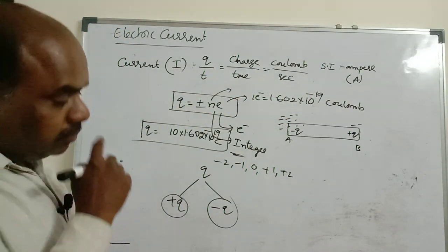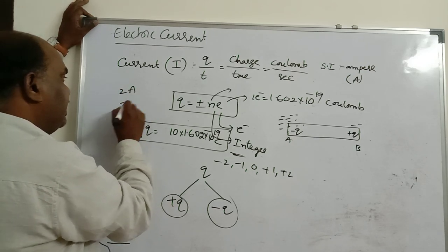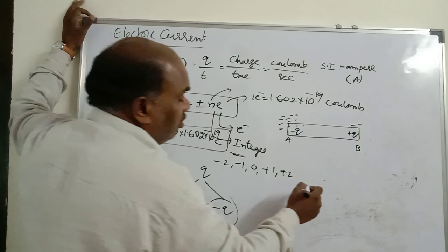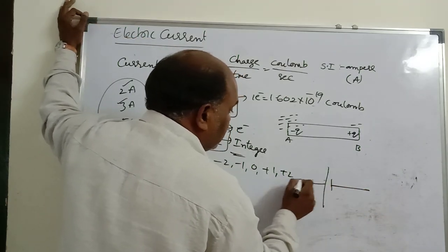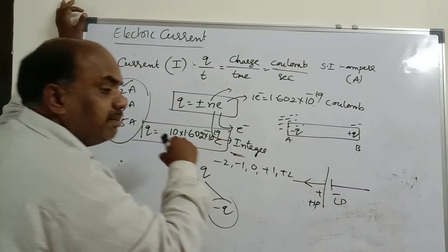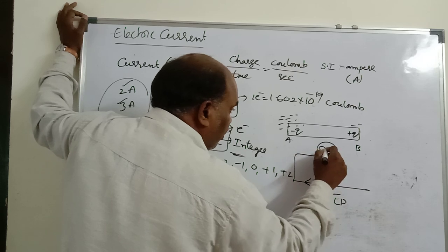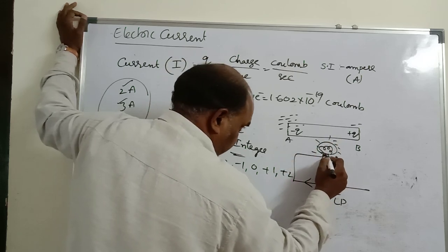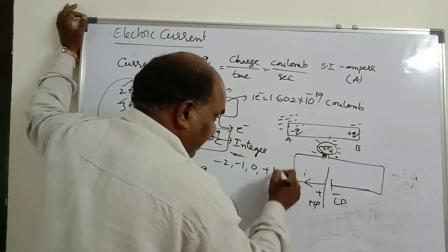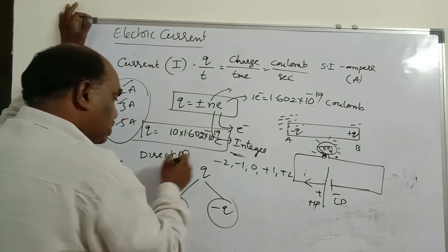Ampere is the SI unit of current. Current has both magnitude — you can measure 2, 3, or 5 amperes — and direction. Current always flows from higher potential to lower potential, meaning from the battery's positive terminal to the negative terminal. The bulb glows because of the potential difference supplied by the battery.